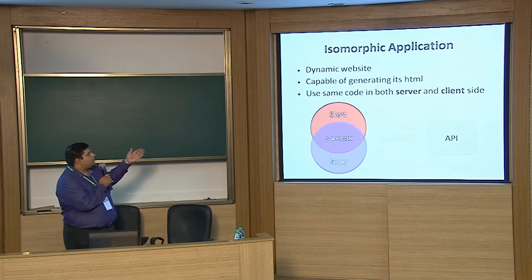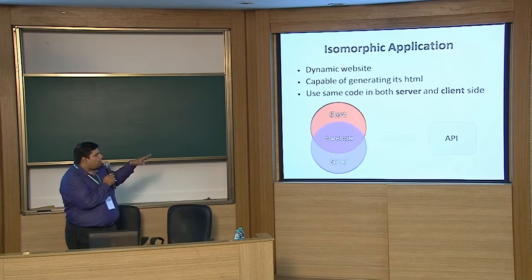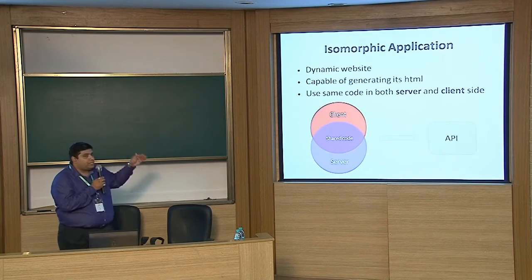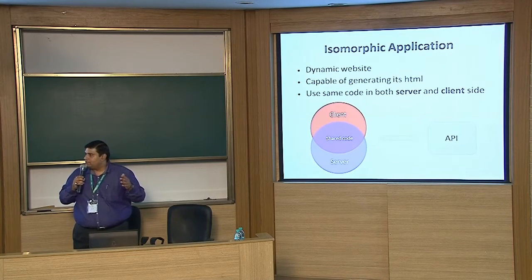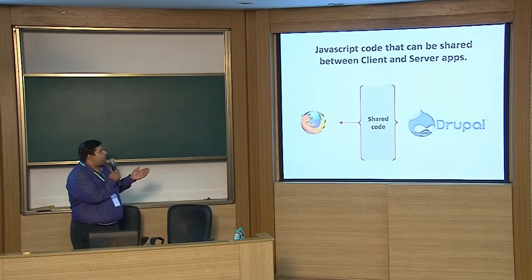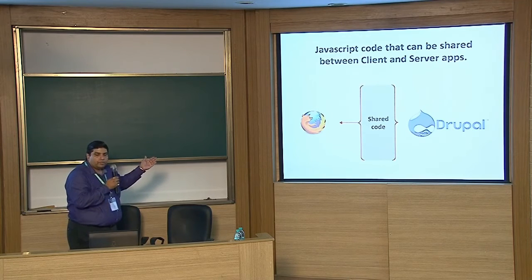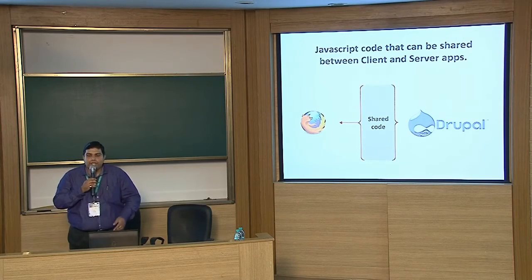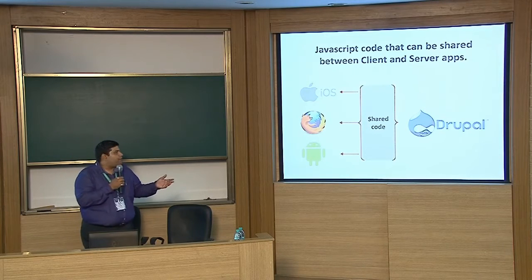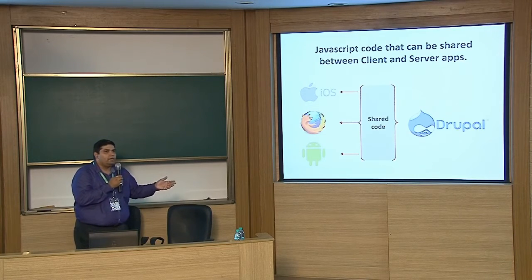The last line sums it up: use the same code on both the server and the client. As per the isomorphic application concept, the amount of code shared between client and server should be at least 80 to 90%. For this presentation, we are talking about it with respect to Drupal and how we can share code from Drupal to the browser. An isomorphic application can also easily share code for iOS, Android, Microsoft, or any other platform — it's a cross-platform thing.